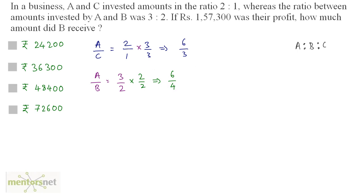The reason I did this was to make A's component equal. Here A is 6, here also A is 6. As we have A's component equal in both the ratios, I can write A is 6, B is 4 and C is 3. So 6 is to 4 is to 3 is the ratio of the profits earned by A, B and C.